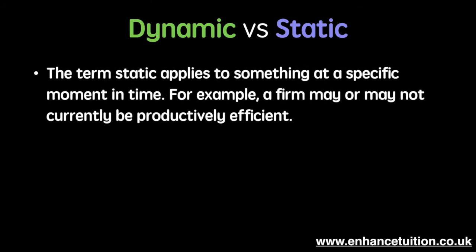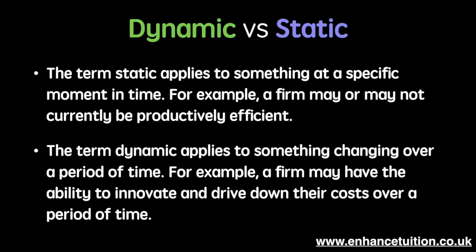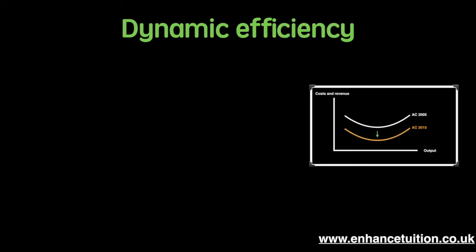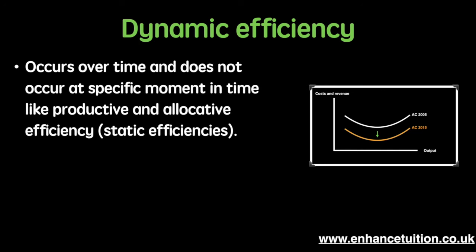The term static applies to something at a specific moment in time. For example, a firm may or may not currently be productively efficient. The term dynamic applies to something changing over a period of time. For example, a firm may have the ability to innovate and drive down their costs over a period of time. Dynamic efficiency occurs over time and not at a specific moment like productive and allocative efficiency, which are considered static efficiencies.